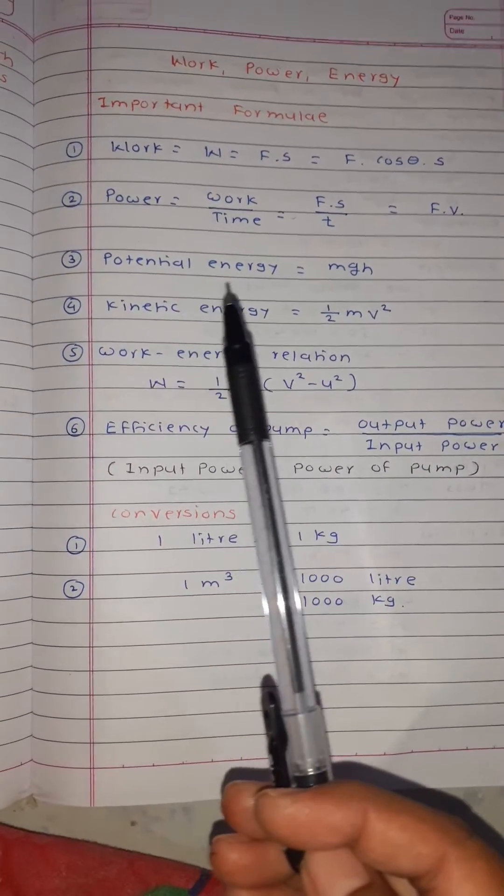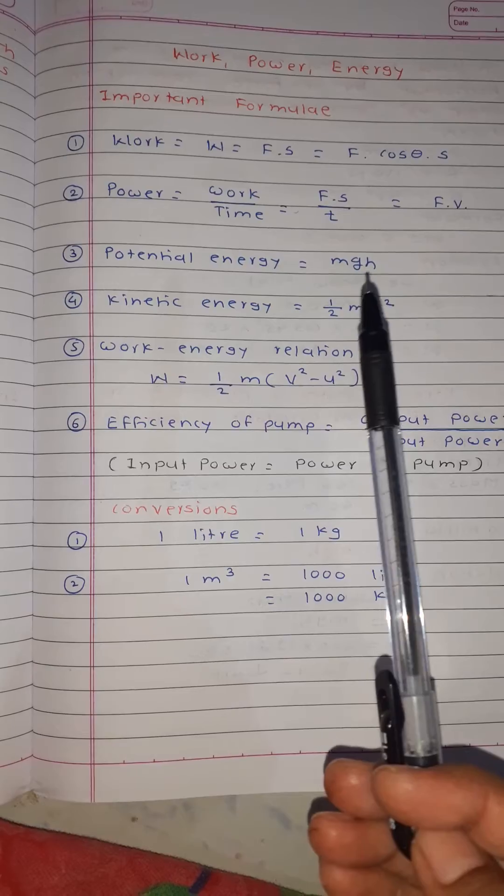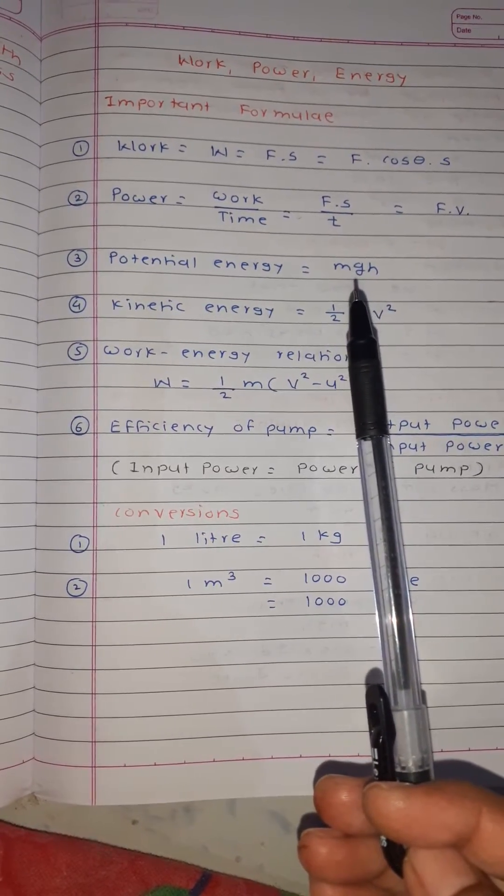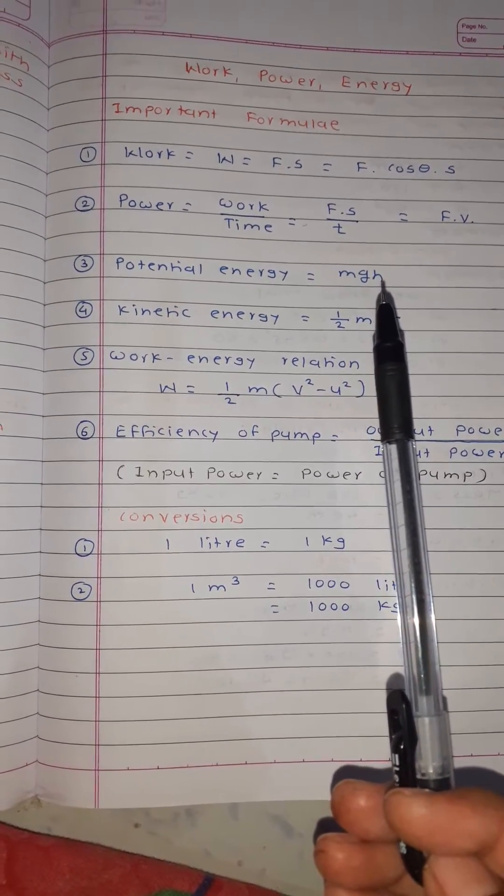Potential energy = m × g × h where m is mass, g is acceleration due to gravity, and h is height or distance.